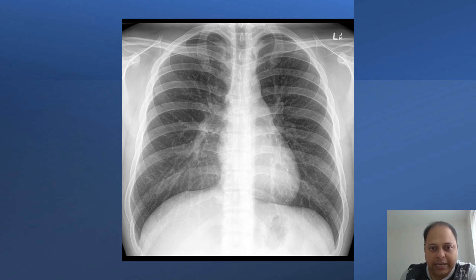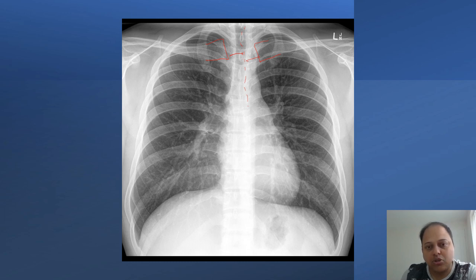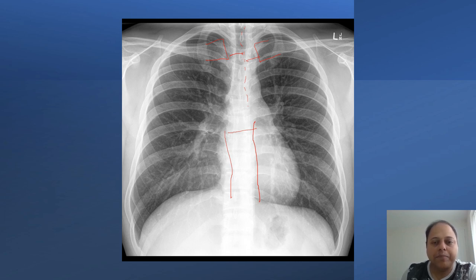To assess rotation, measure the distance between the medial end of the clavicle on both sides and the spinous process — this distance should be equal on both sides. If it is a rotated film, the distance will be unequal. The next thing to note is exposure. You should be able to see the vertebrae behind the heart in a properly exposed film. If it is overexposed, the lung fields will appear more black and may mimic the appearance of emphysematous lungs.